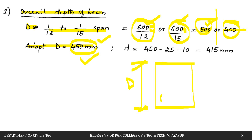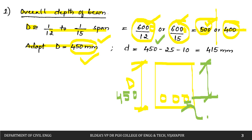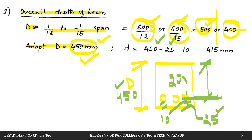Next, we calculate the effective depth. Effective depth is measured from the top face of the concrete to the center of the reinforcement. With total depth D = 450 mm, clear cover = 25 mm, and assuming 20 mm diameter bars (half = 10 mm), the effective depth d = 450 − 25 − 10 = 415 mm.